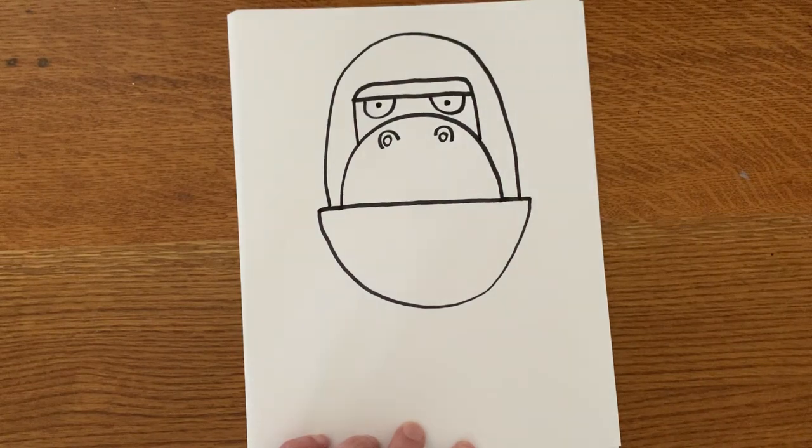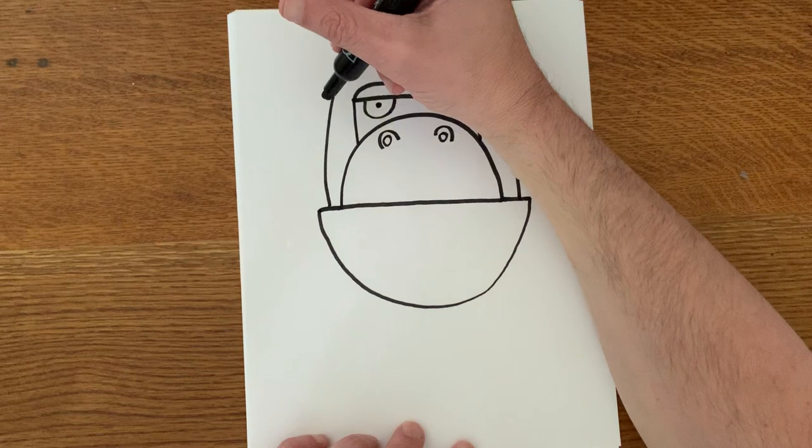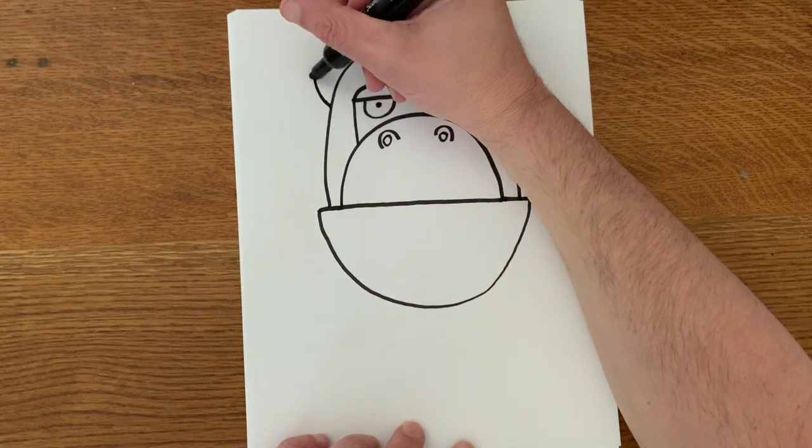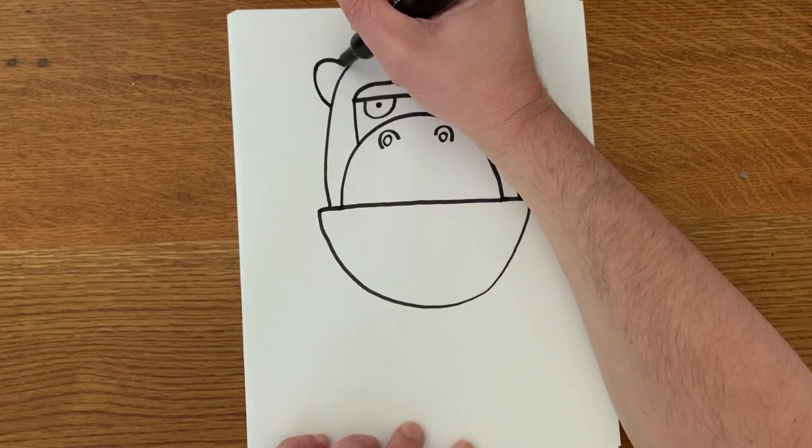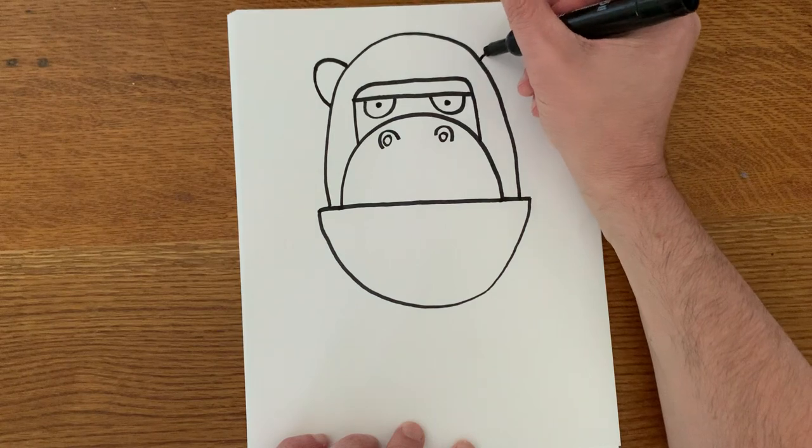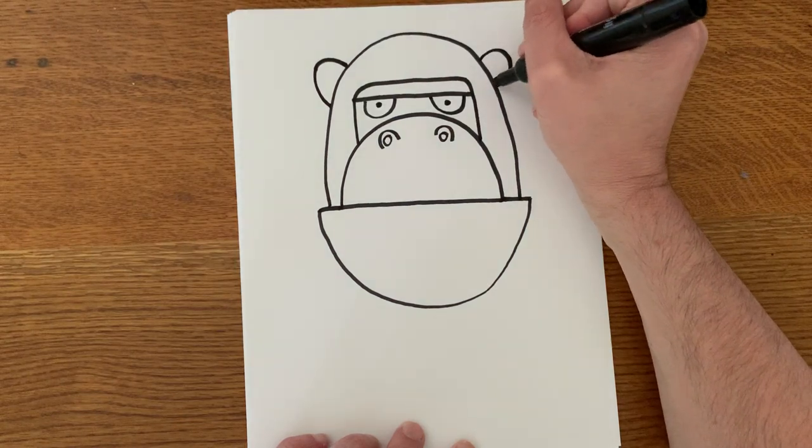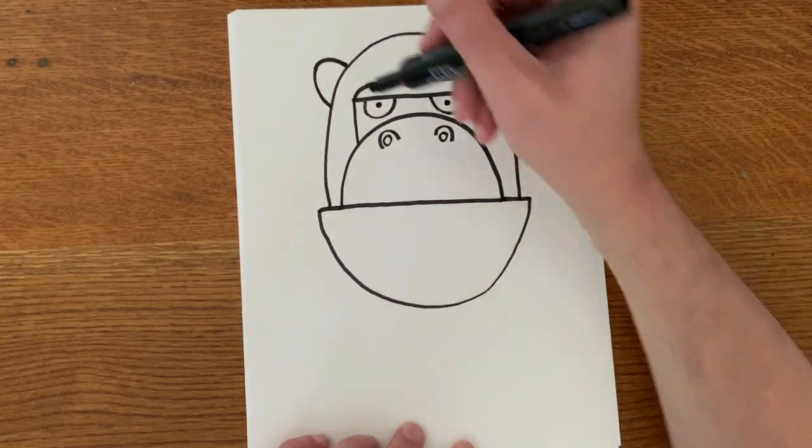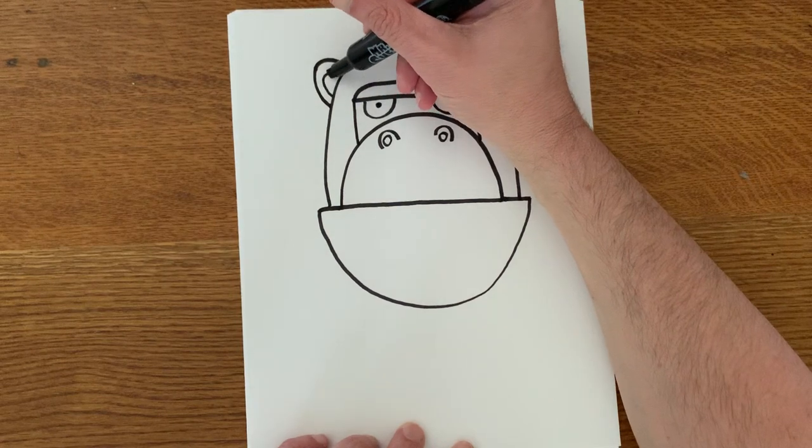All right, we're going to also add some ears in. Lots of arcs or upside down U's or rainbow shapes in this one.